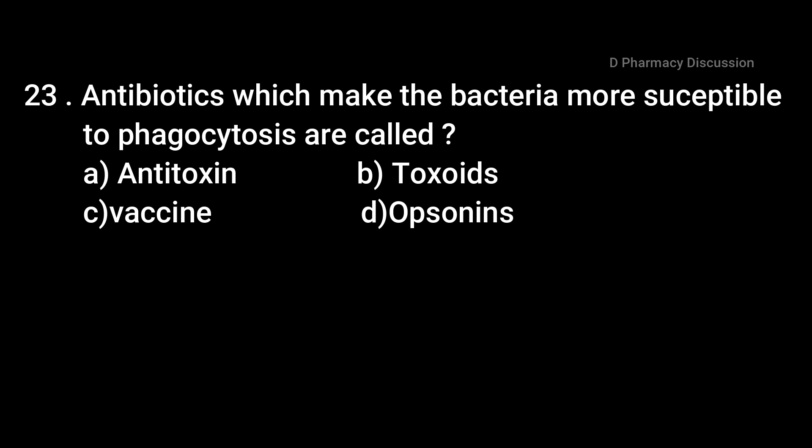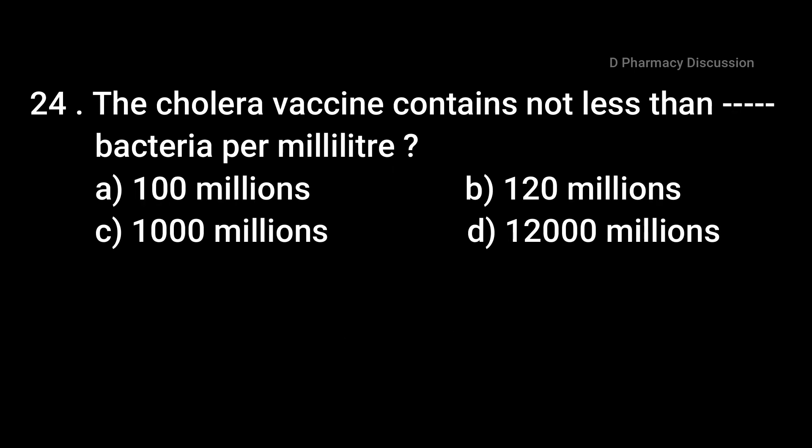Question 23: Antibiotics which make bacteria more susceptible to phagocytosis are called. Option A: antitoxin, B: toxoids, C: vaccine, and Option D: opsonins. Correct answer is Option D, opsonins. Question 24: The cholera vaccine contains no less than dash bacteria per milliliter. Option A: 100 million, B: 120 million, C: 1000 million, and Option D: 12,000 million.